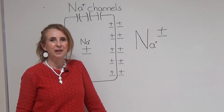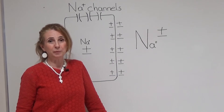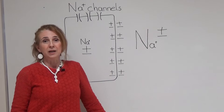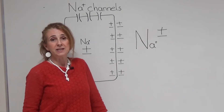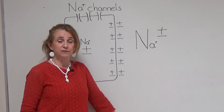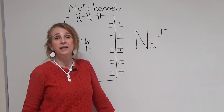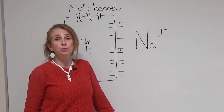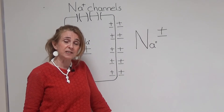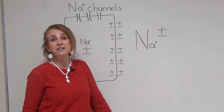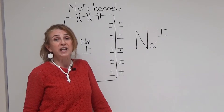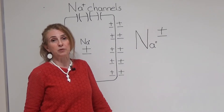Hello. Welcome to my classroom. This video aims to explain how a concentration difference for an ion can produce an electrical potential difference between the two sides of the cell membrane, which is called an equilibrium potential.